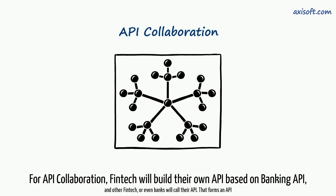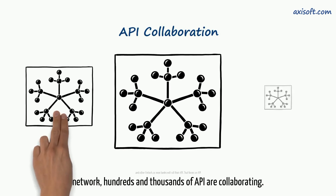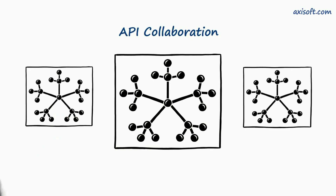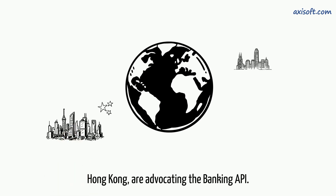For API collaboration, fintech will build their own API based on banking APIs, and other fintech companies or even banks will call their API — forming an API network where hundreds and thousands of APIs are collaborating. Currently, regulators and global financial centers such as Singapore and Hong Kong are advocating banking API.